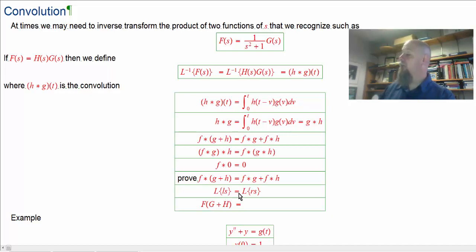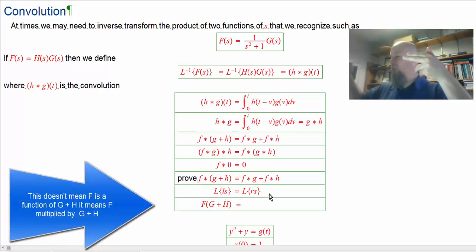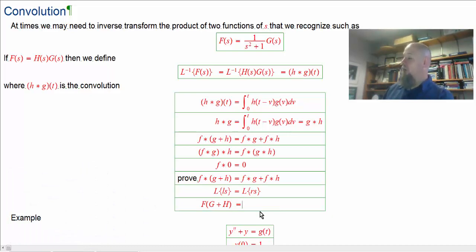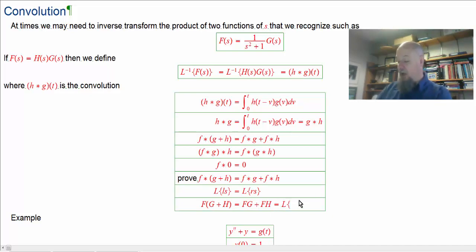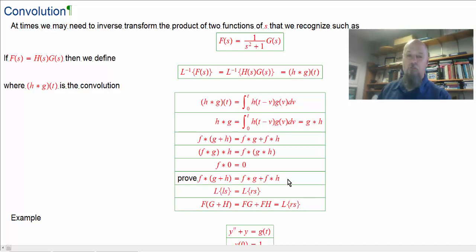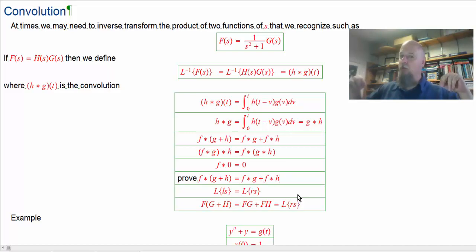If I can prove the Laplace of the left side equals the Laplace of the right side, I can take the inverse Laplace of both and get the result I want. The Laplace of the left side is F times (G plus H), which equals F times G plus F times H — which is exactly the Laplace of the right side. So taking the inverse Laplace of both sides proves the distributive property. The other two proofs are similar: move into the Laplace world where convolution is plain multiplication, use known multiplication properties.